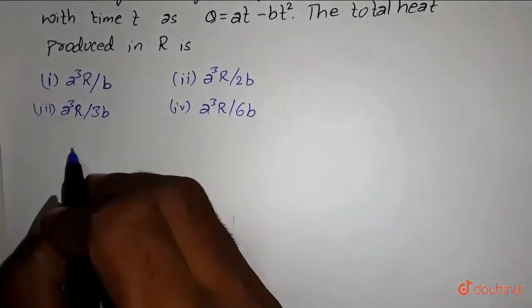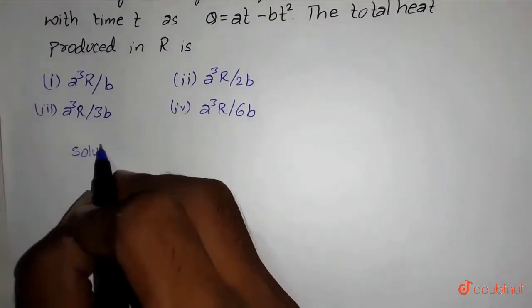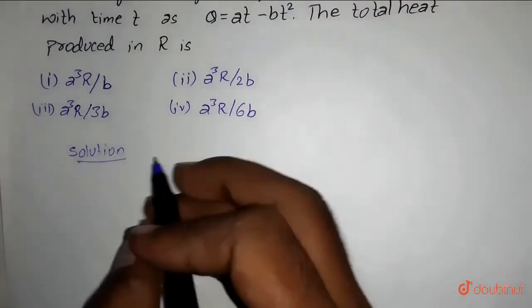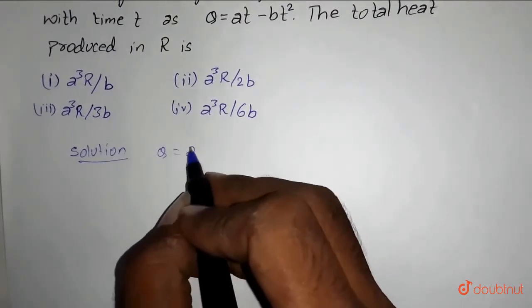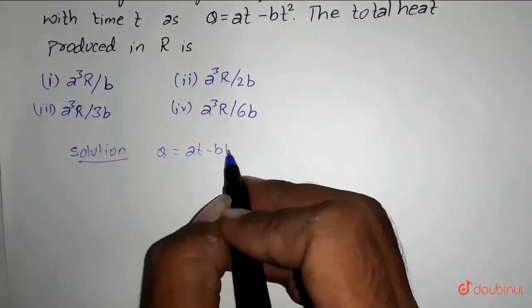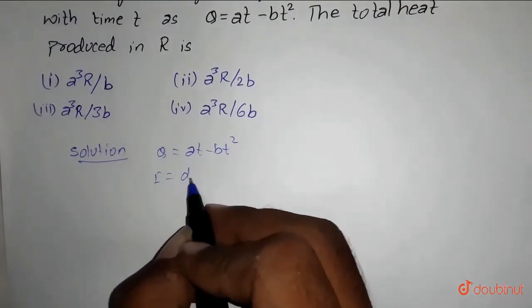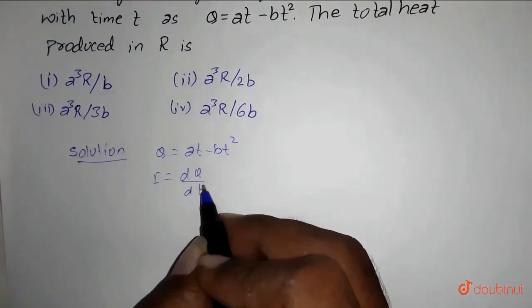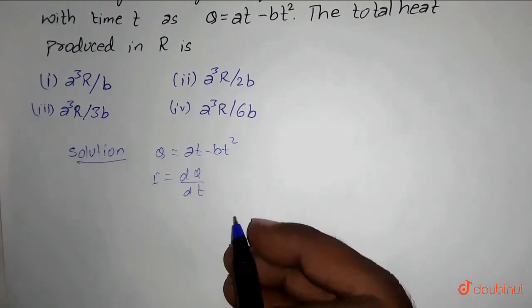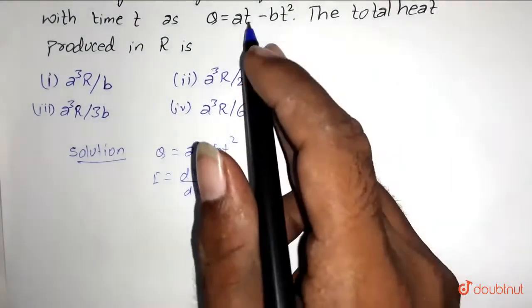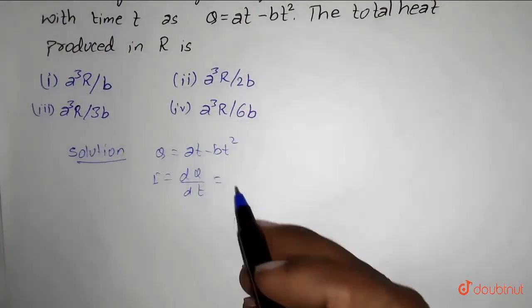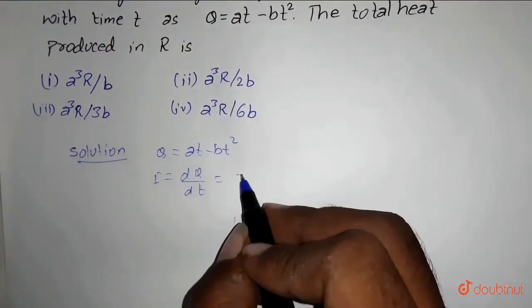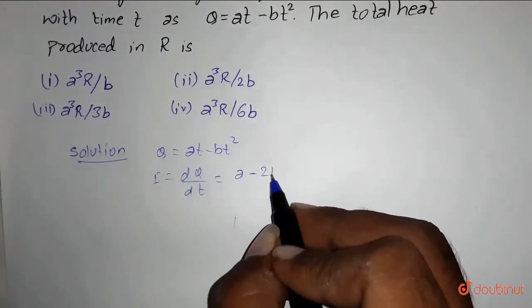Solution. It is given that q equals at minus bt square. And as we know, i equals dq by dt. That is, current equals the differentiation of charge with respect to time. So which equals the differentiation of this part, that is at minus bt square will be a minus 2bt.